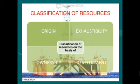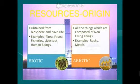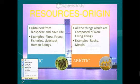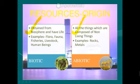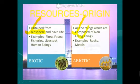First, we will classify resources on the basis of origin. On the basis of origin, resources may be broadly classified into two types: biotic and abiotic. Biotic means those resources that have life — that means all flora and fauna. Flora means vegetation and fauna means all animals and living organisms. They belong to the biosphere. Abiotic resources are all non-living things, such as rocks and metals, which have no life.